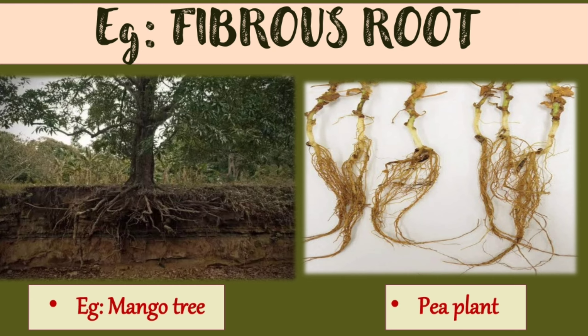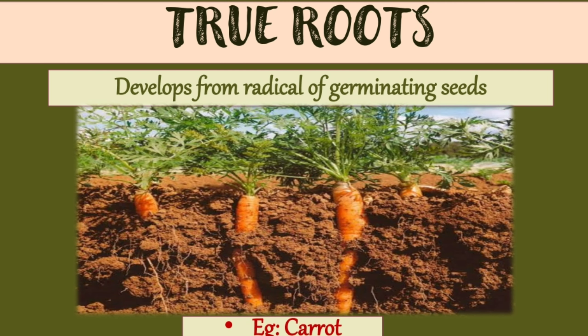Next are true roots. True roots develop from the radicle of the germinating seed. An example of a true root is the carrot — you can see that carrot is a true root.